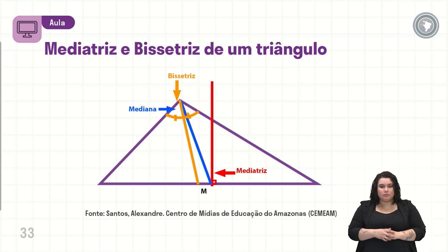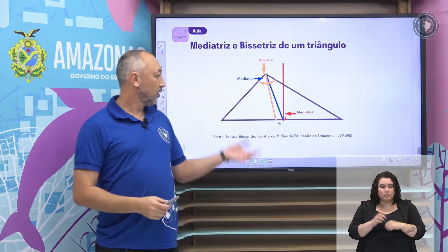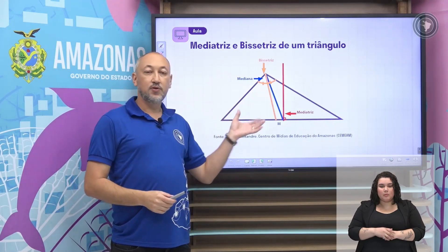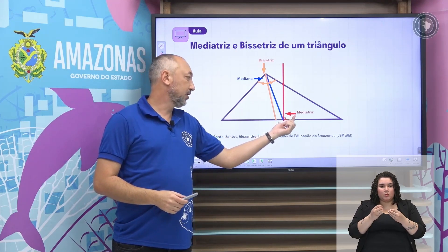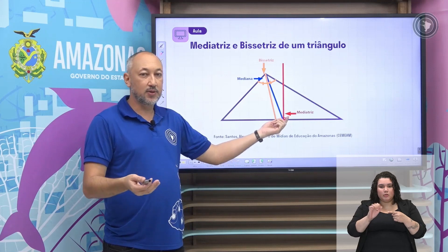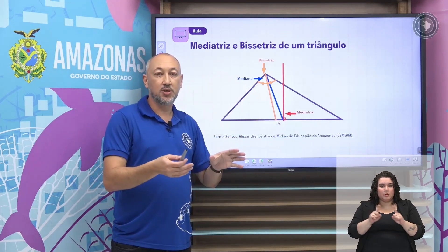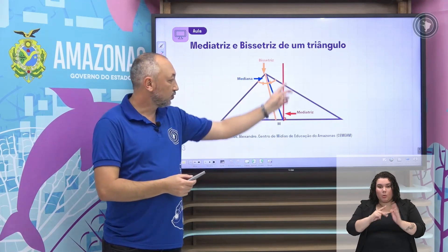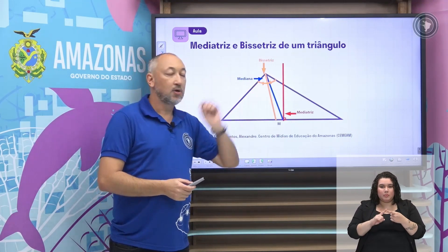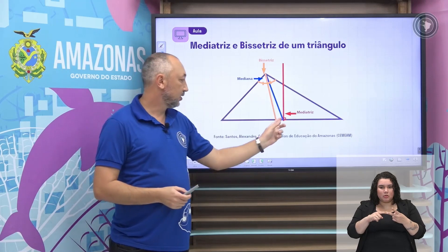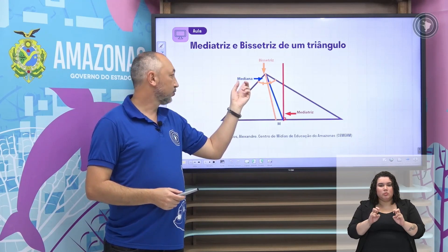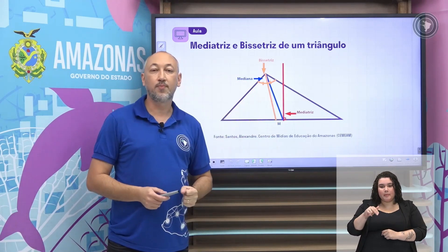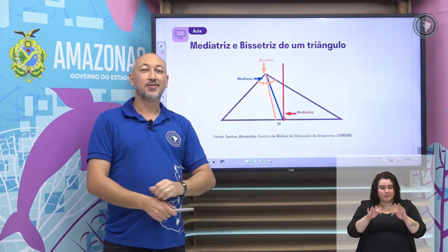Nós conseguimos aí novamente — voltando ao nosso triângulo, vimos esses conceitos: o que é uma mediatriz, e sem precisar medir só com régua, com o compasso nós conseguimos traçar tanto a bissetriz de um ângulo quanto a mediatriz de um segmento. Vimos também os conceitos de mediana e de ponto médio. Muito bem, ficamos por aqui e até a próxima.